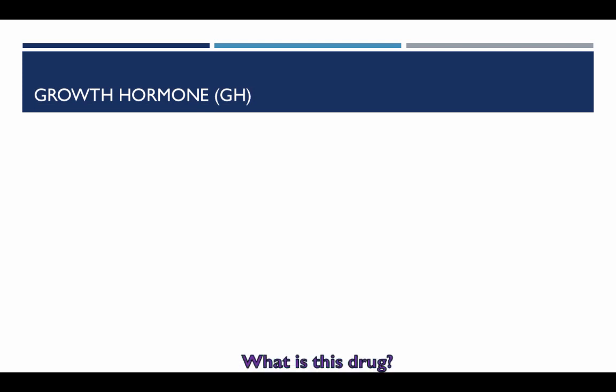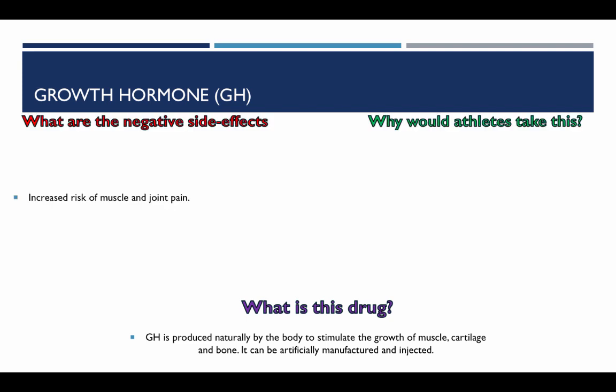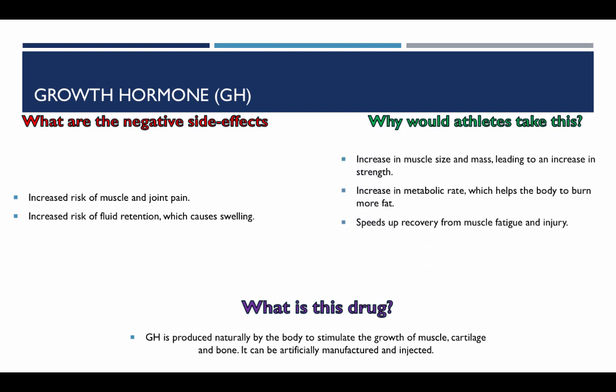Growth hormones. What is this drug? GH is produced naturally by the body to stimulate the growth of muscle, cartilage, and bone, and it can be artificially manufactured and injected. Negative side effects include increased risk of muscle and joint pain, and increased risk of fluid retention, which causes swelling. Why would an athlete take this? An increase in muscle size and mass leads to an increase in strength, an increase in metabolic rate which helps the body burn more fat, and it speeds up recovery from muscle fatigue and injury.